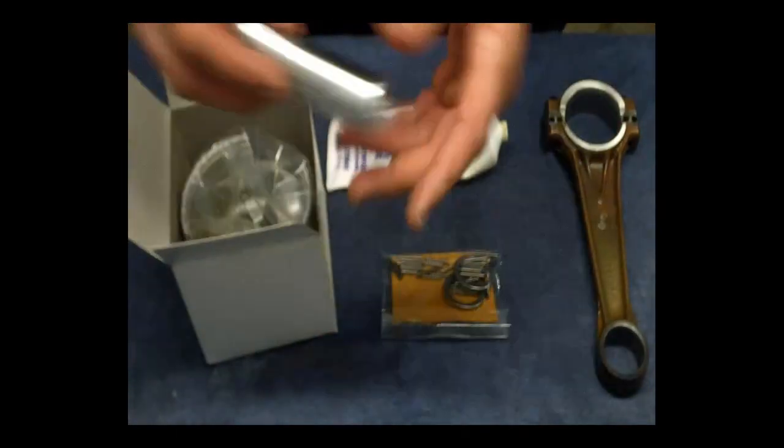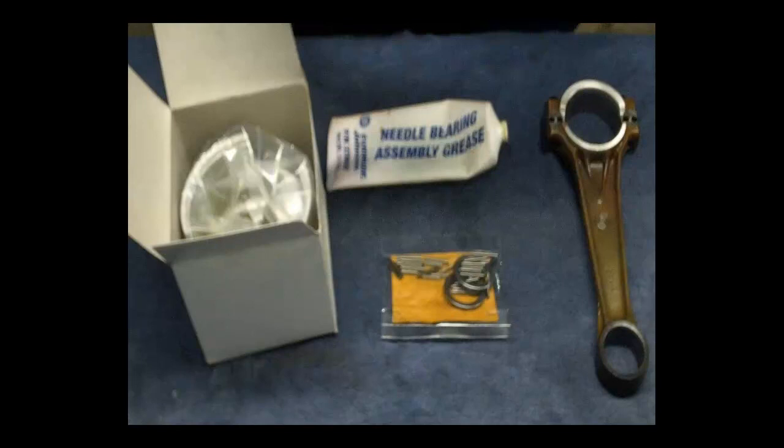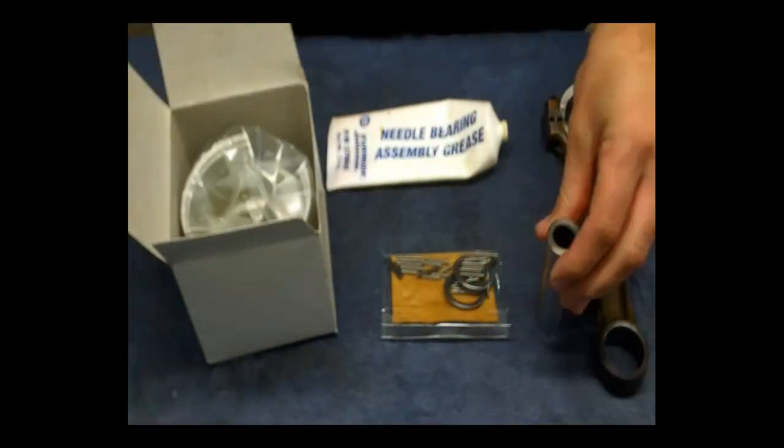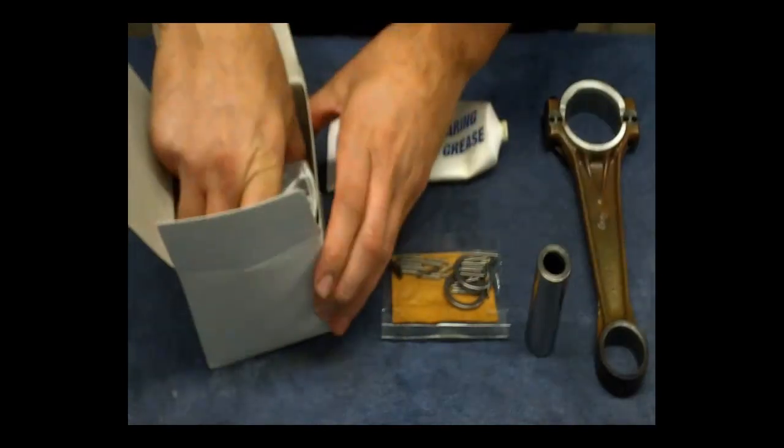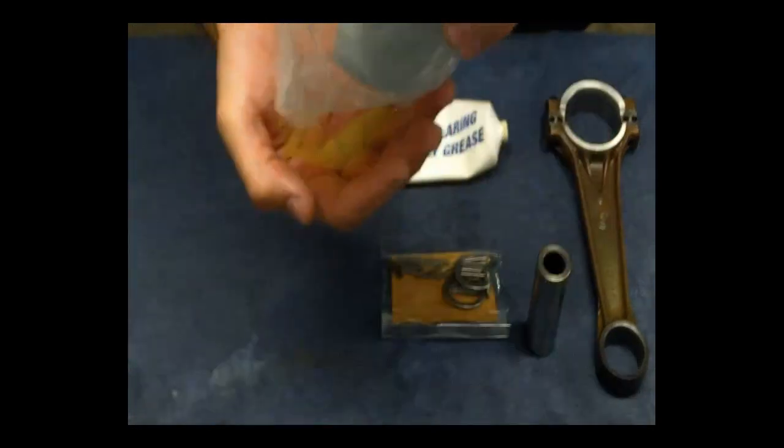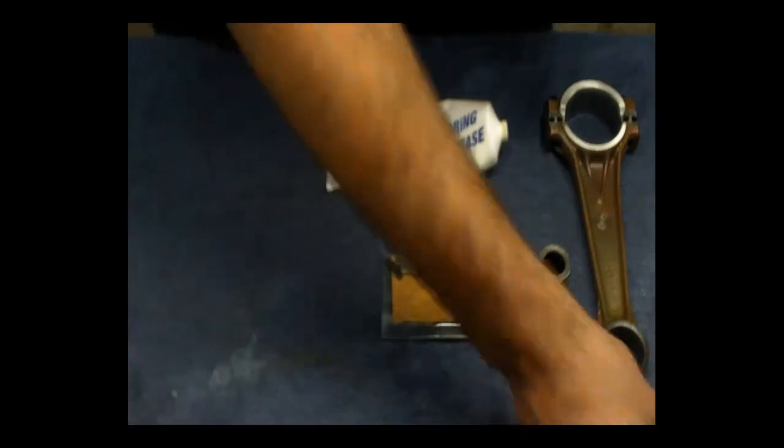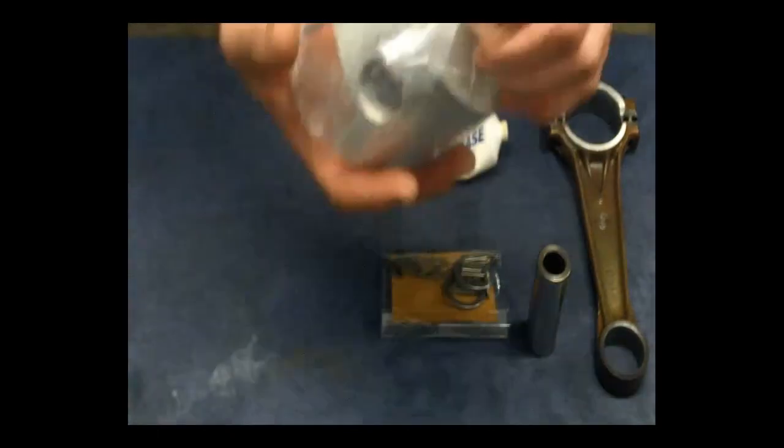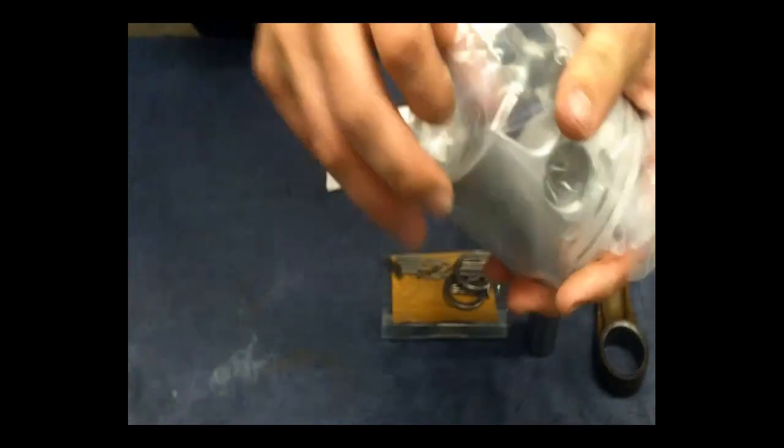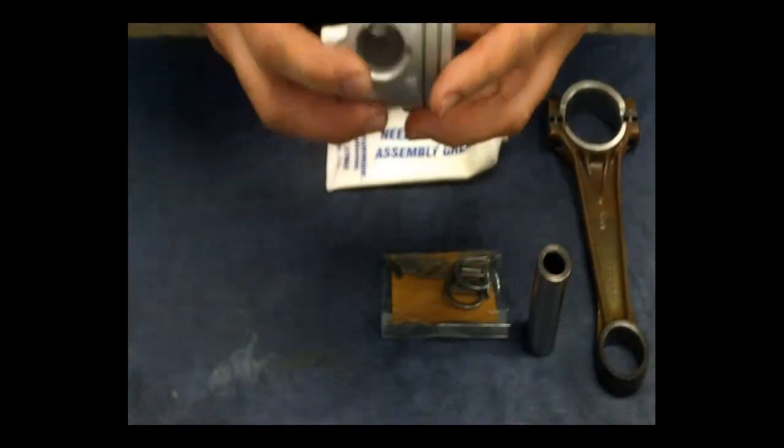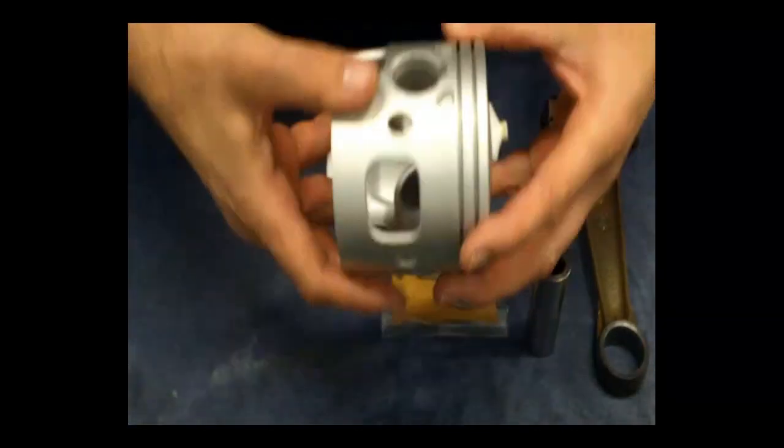So when you first open your piston, you want to check that it's got everything in it: piston rings, the wrist pin or gudgeon pin, the retaining circlips, and of course the piston itself. Now when I first unpack a piston, I always inspect the piston for any manufacturing defects. So I just have a quick look at the casting where the ring retaining pins have been installed and just cast my eyes over it quickly.